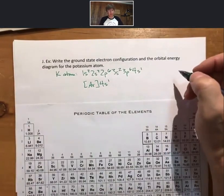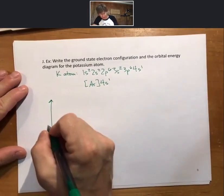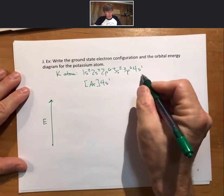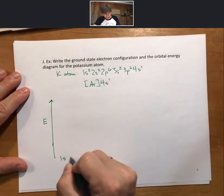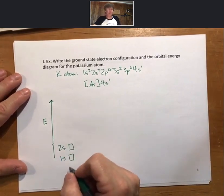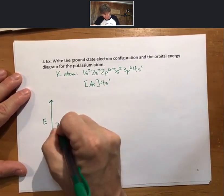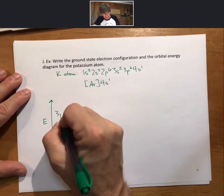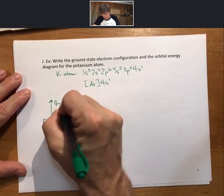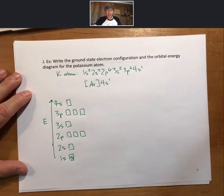Now the orbital energy diagram for the potassium atom. That's going to have an energy axis, and then all of the sublevels, with each box representing one orbital. We'll fill in all the electrons.